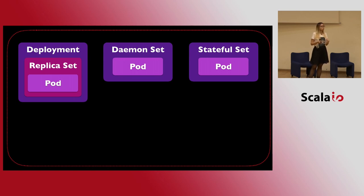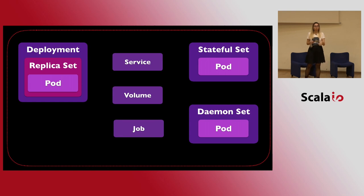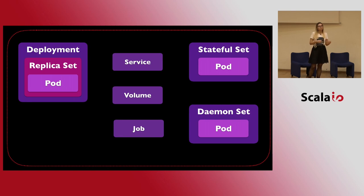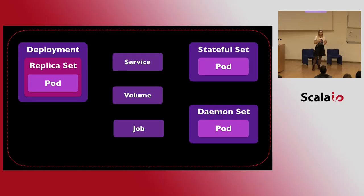Why would you need sequenced pods? If you want rolling upgrades in a specified order, it's useful. A daemon set runs one pod on each node — for example, to run utility programs like gathering logs and metrics. There's also a job, which is similar to a deployment but runs until completion — all pods are eventually purged, making it a one-time object, while deployments and stateful sets live longer. A job may leave pods for a while so you can collect logs.